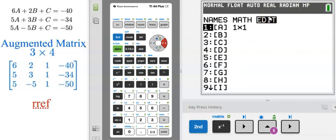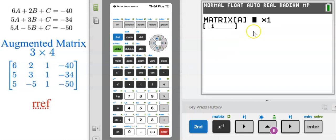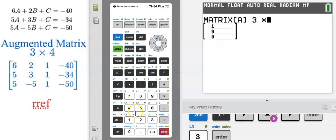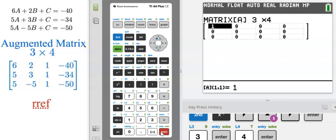We're going to edit matrix A, so I'm going to hit enter. I'm going to change this to a three row by four column, so we're going to enter three, enter four. Now it's going to be a three by four, and we're just going to enter each row.